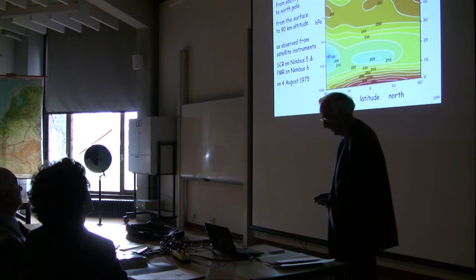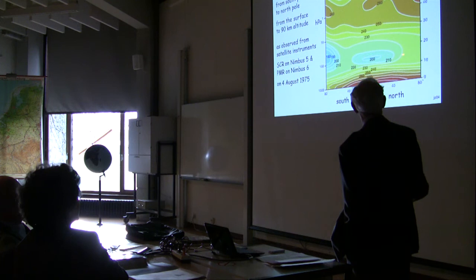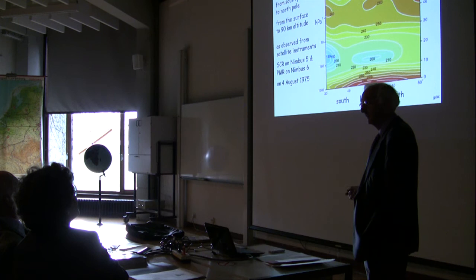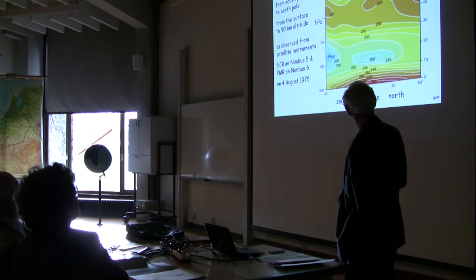We could also, because of a later instrument called the pressure modulator radiometer, measure temperature right up to about 90 kilometres. There is the cross-section of Earth's temperature averaged over a day, taken from Nimbus 5 and Nimbus 6, using the selective chopper and pressure modulator radiometers. That is the temperature structure of the whole atmosphere taken from space — completely revolutionary because we had measurements from the whole atmosphere right from the bottom to the top.